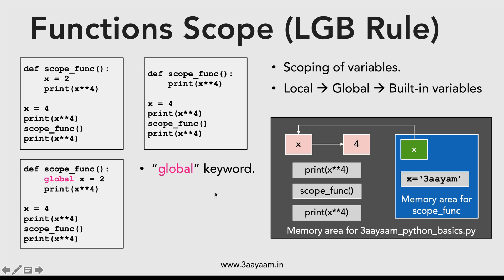If I then assign x to a new value like 'triam' inside the function, it will update the global x. So printing x both inside and outside the function will show 'triam'. Remember the name must match — if you use global y but y is not defined in the main program, the global keyword won't work. This is what global means: it points to the global variable rather than a temporary local one.